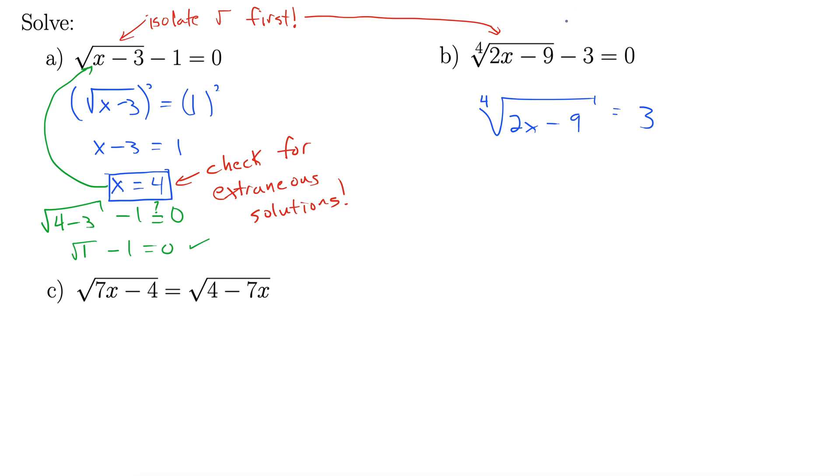Alright, well just like we squared both sides in part a, here we're going to take both sides to the 4th power to get rid of that 4th root. Okay, so to the 4th power here, to the 4th power here.